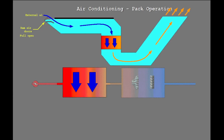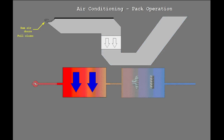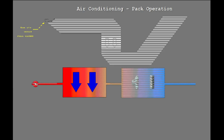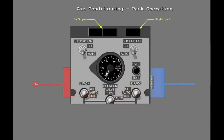The ram air doors are fully open while on the ground and during slow flight with the flaps extended, and move as necessary between full open and full closed in cruise flight. When the ram air door is full open, the related ram door full open light illuminates on the air conditioning bleed air controls panel.